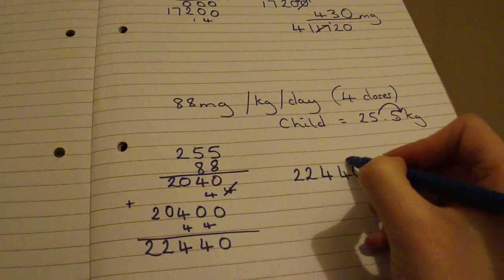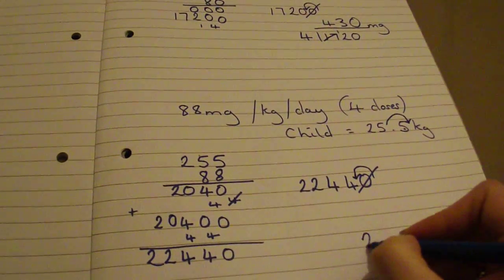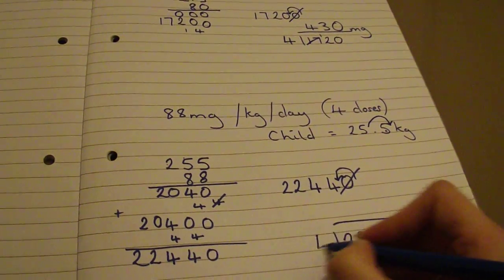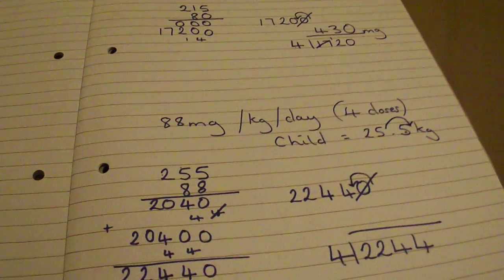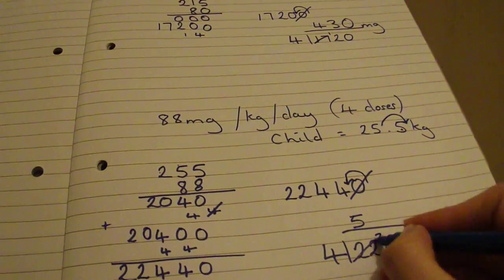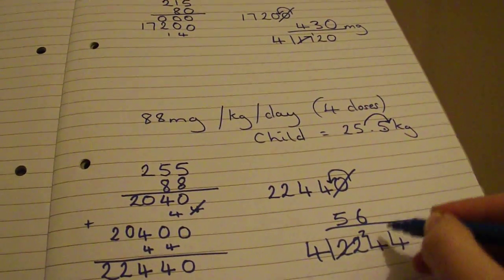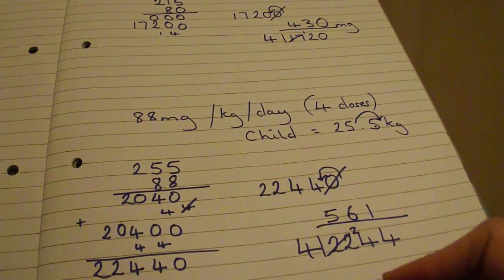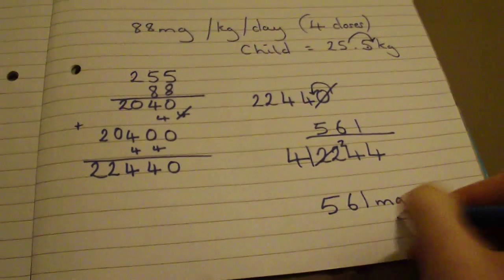Again, you've taken your decimal point out so you have to put it back in — that knocks off that zero, leaving you with 2244. Dividing by 4: 4 into 22 goes 5 times carry 2; 4 into 24 goes 6 times; 4 into 4 goes once — so you end up with 561 mg per dose.